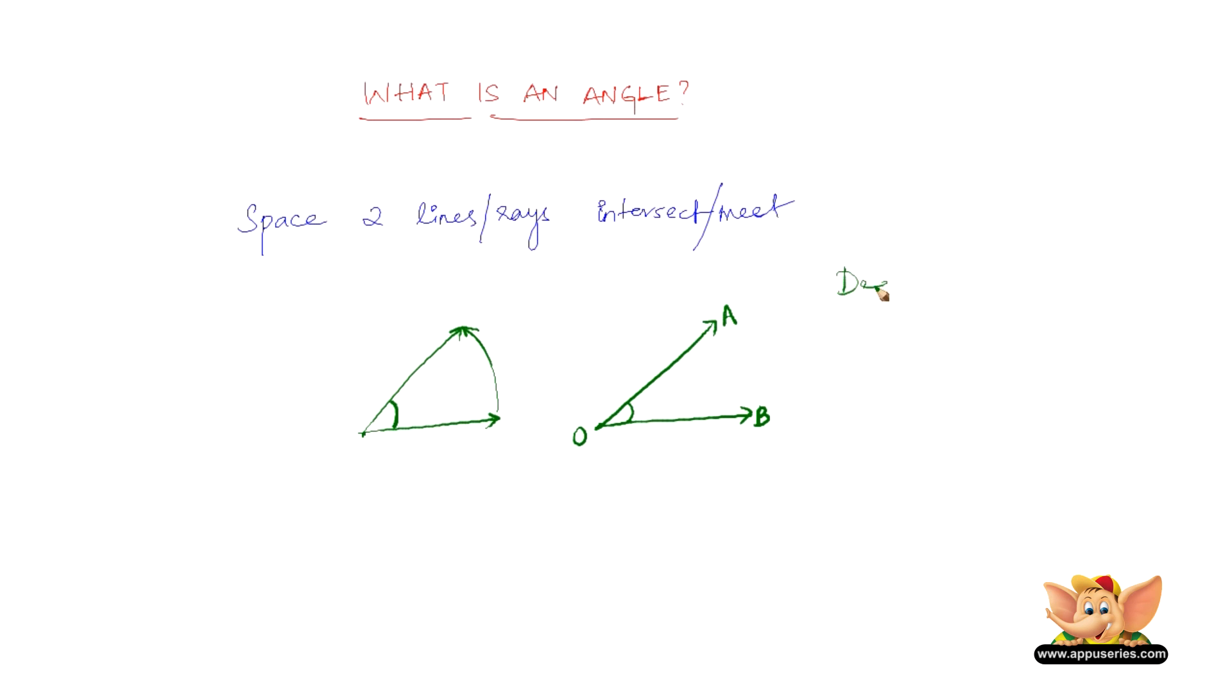Angles are usually measured in degrees or radians. But the most common way of measuring is in degrees.